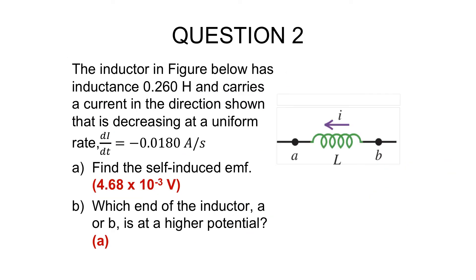These are questions you need to do by yourself. Please try to find the directions and which terminal has higher potential. First determine if there is any changing of current. If yes, is it decreasing or increasing? Determine the direction of B produced by the current first, then apply Lenz's law for B induced. If decreasing, B induced is in the same direction.